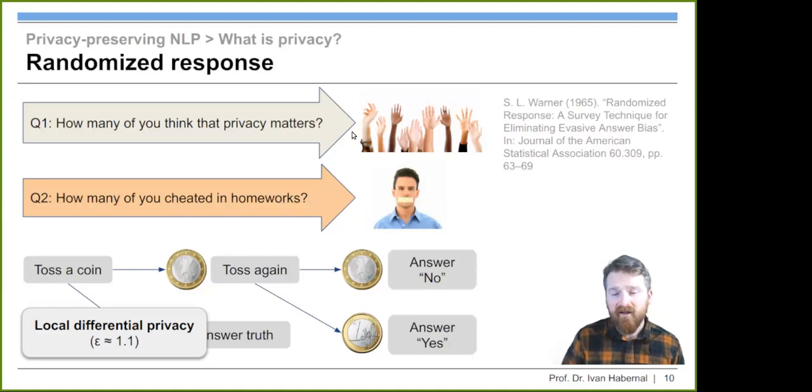This is very famous since the 1960s. It's called the randomized response, but it's one particular instance of something we know as differential privacy nowadays. This tiny epsilon here is the strength of privacy. The lower the epsilon, the better. If epsilon would be zero, it would be complete privacy for everybody. It grows exponentially. This is local differential privacy by protecting everybody's privacy.